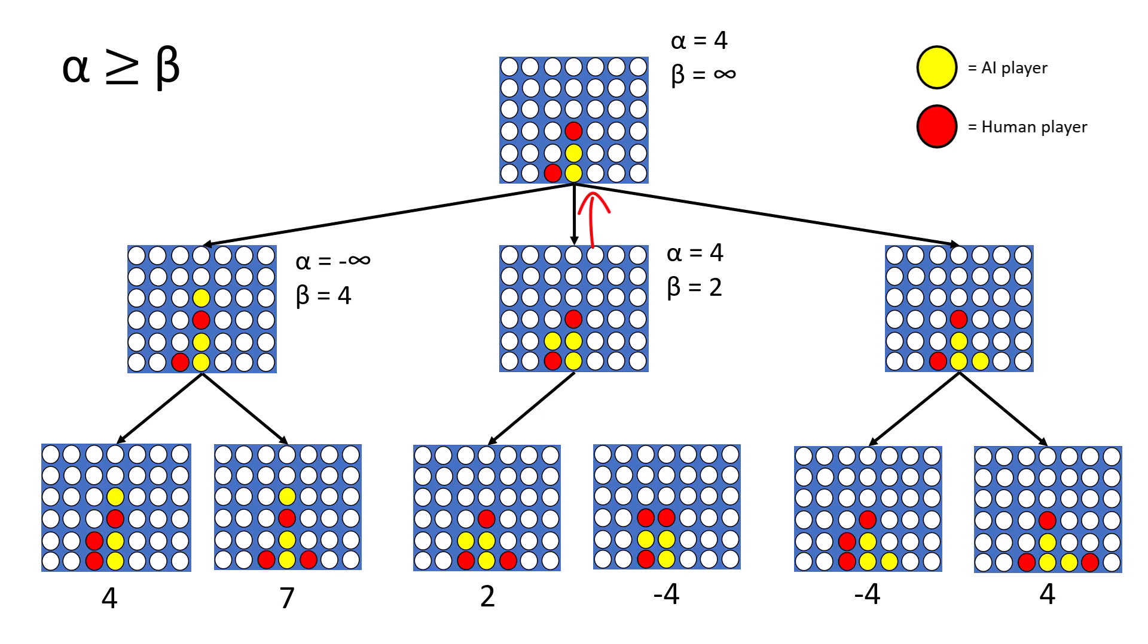We can now go back to the top of the tree, where it is the AI player or maximizing player's turn, meaning that the alpha value will change. It has the option of 4 and 2, and since 4 is greater than 2, the value for alpha will remain 4.